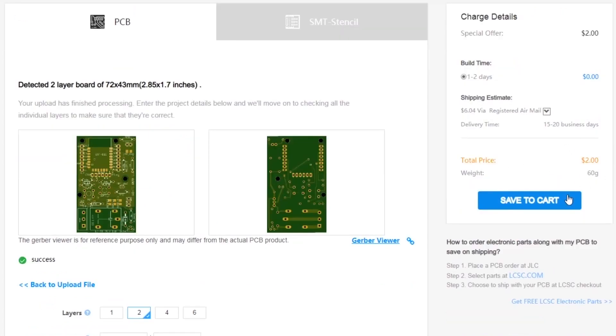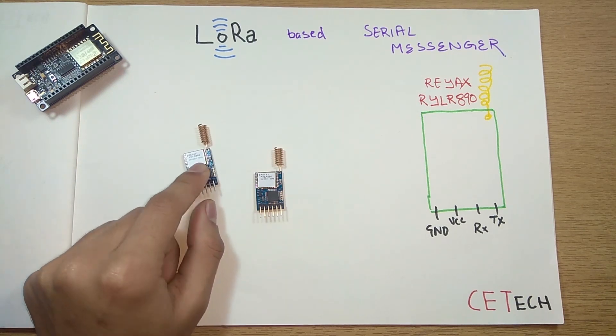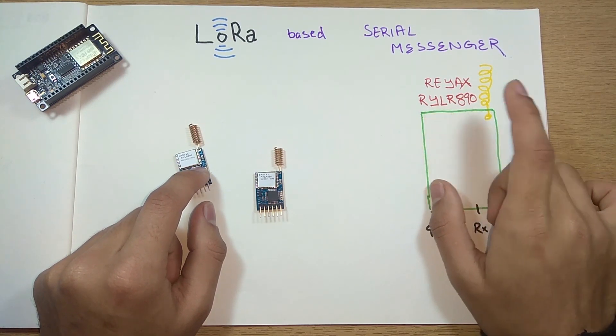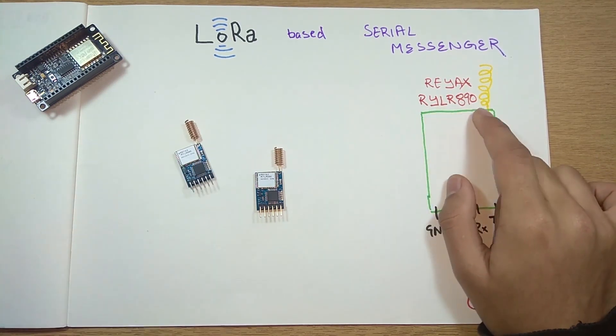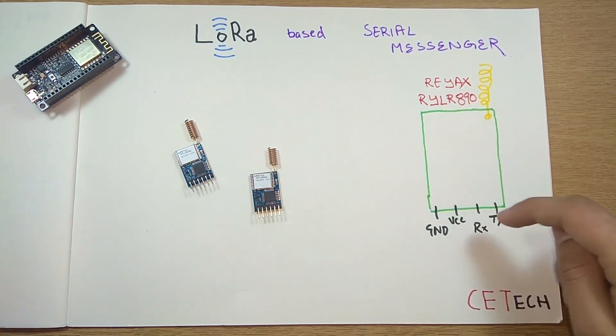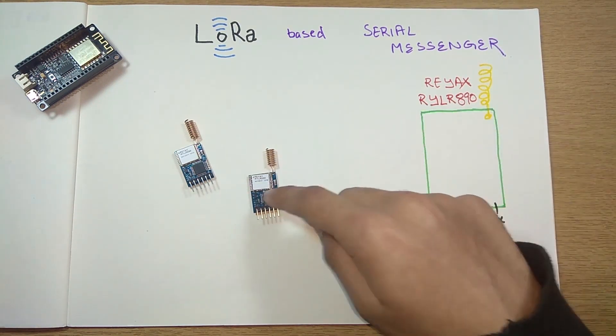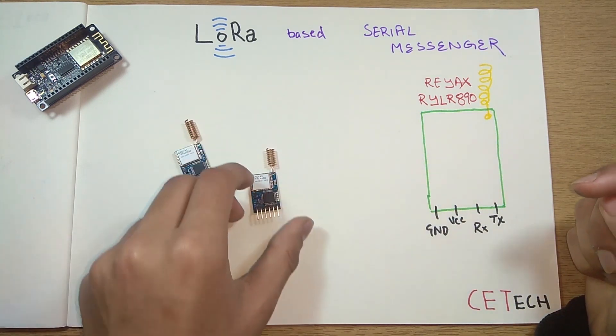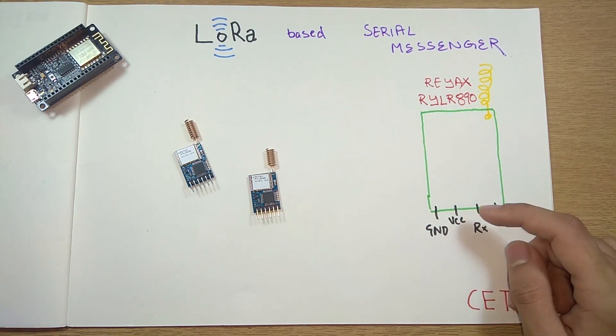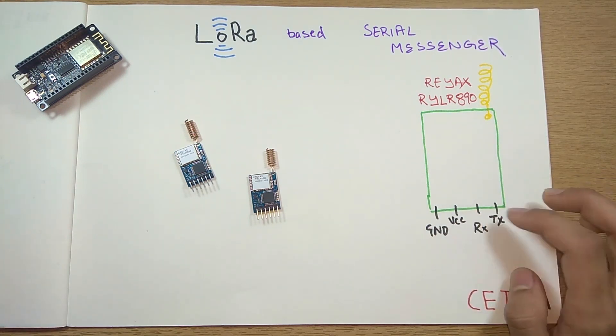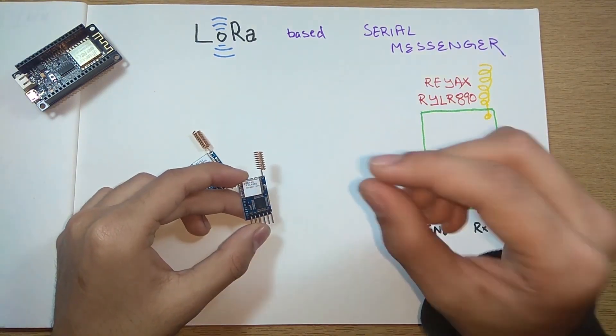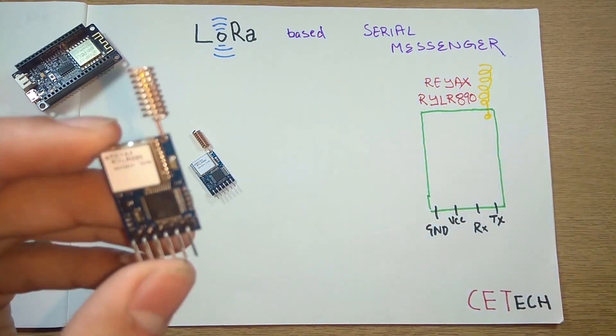Let's first take a closer look at the module we're going to use. This is the Reacts R-Y-L-R-890, a module working around the frequency 890 megahertz. We use majorly four pins - it has two other pins as well, reset and not connected. These are the four pins we will majorly use. A couple of pins are the power pins and a couple are the UART pins - the RX and TX. This is priced at $15 and this is not just a Reacts LoRa module.